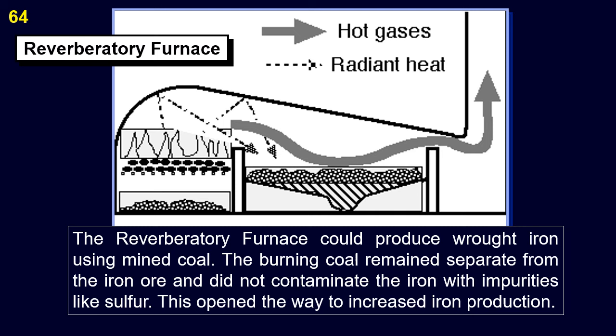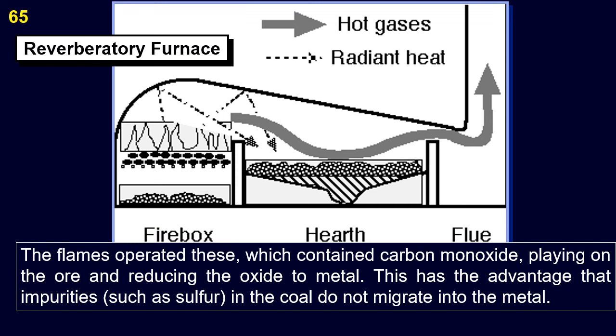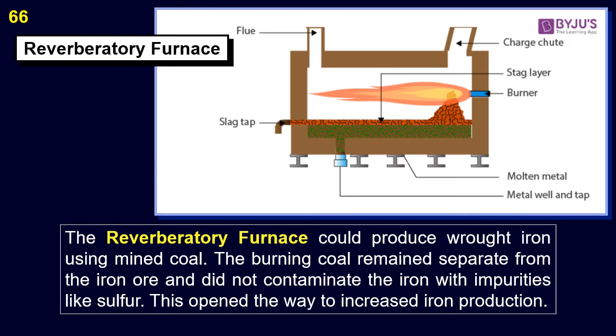The reverberatory furnace could produce wrought iron using mined coal. The burning coal remained separate from the iron ore and did not contaminate the iron with impurities like sulfur. This opened the way to increased iron production. The flames, which contained carbon monoxide, played on the ore and reduced the oxide to metal.